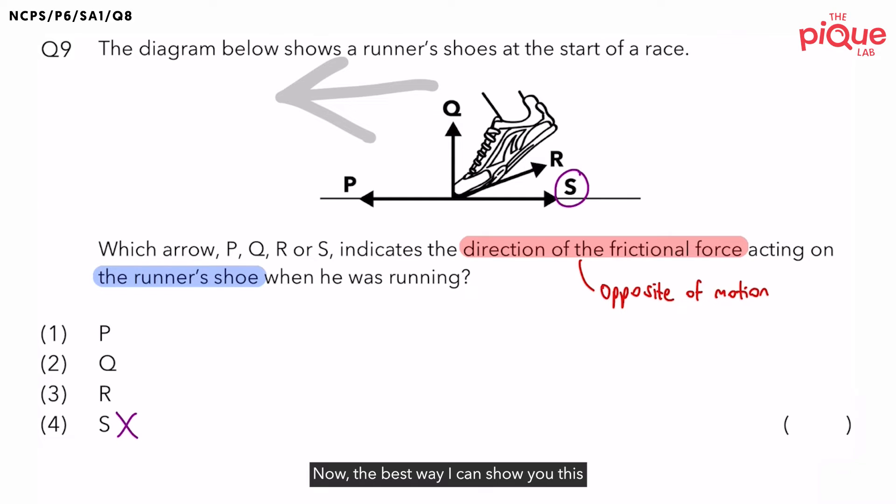Now, the best way I can show you this is by showing you a diagram. So, now, I'm going to draw out two diagrams of the runner. I want you to tell me which diagram here is correct.